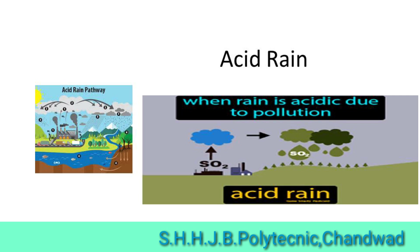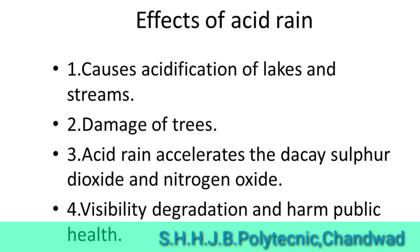What are the effects of acid rain? Acid rain causes acidification of streams and lakes. It damages trees, accelerates the decay involving sulfur dioxide and nitrogen oxide, causes visibility degradation, and harms public health.